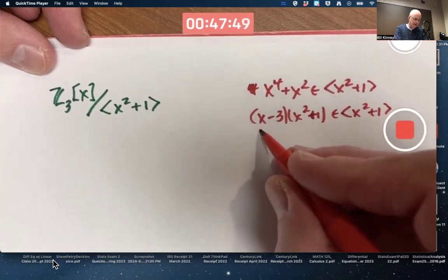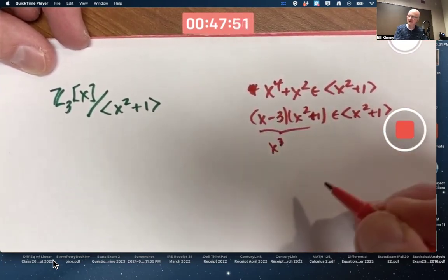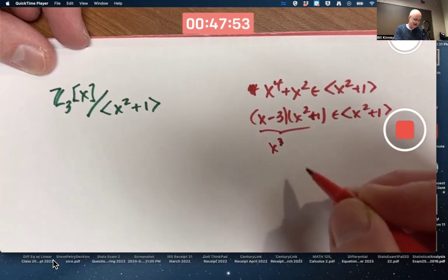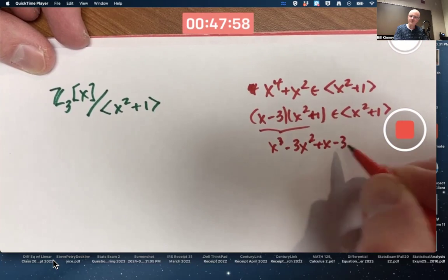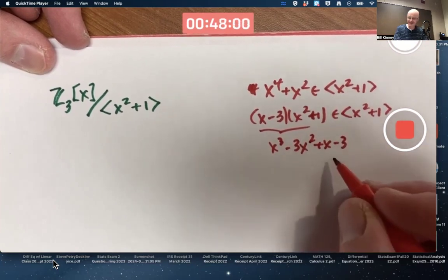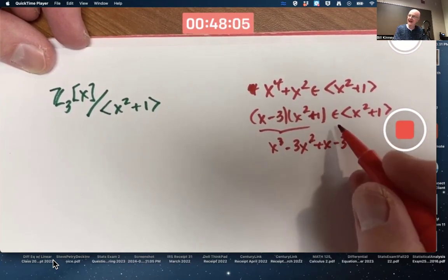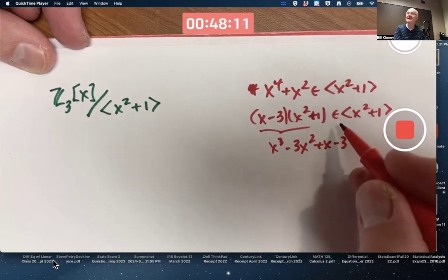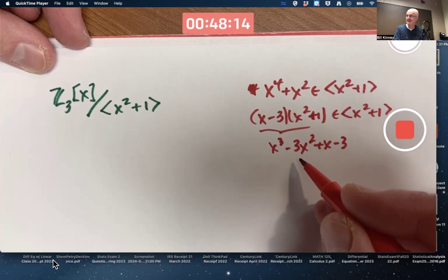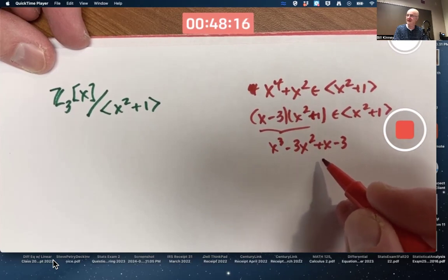But in unfactored form, if you multiply it out, it wouldn't be so clear right away. If you multiply it out, it's x cubed minus 3x squared plus x minus 3. It's not so clear just looking at that, that it's an element of this principal ideal. But because you can factor it, and it has x squared plus 1 as a factor, it is. x squared plus 1, in fact, divides x cubed minus 3x squared plus x minus 3. Right about ring divisibility. Very important.